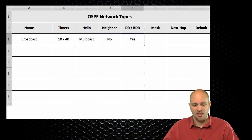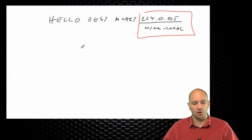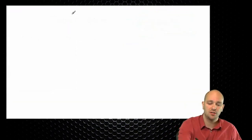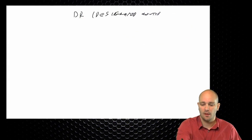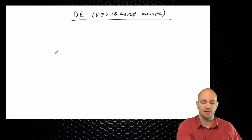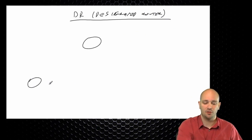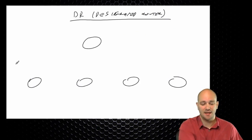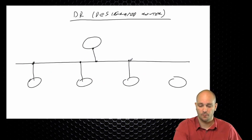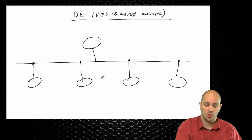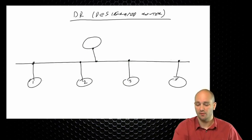Is there DR-BDR election? The answer is yes. So I'm going to talk about the designated router. On a shared segment — let's say we have routers 1, 2, 3, 4, and 5 connected to the same Ethernet link, represented as a bus but nowadays all connected to a switch.